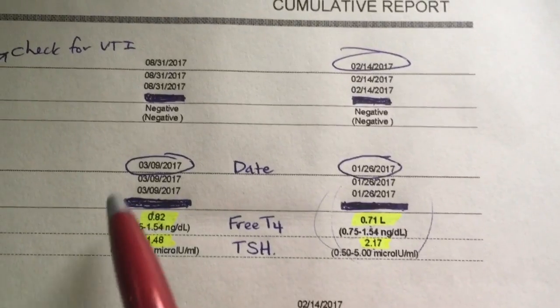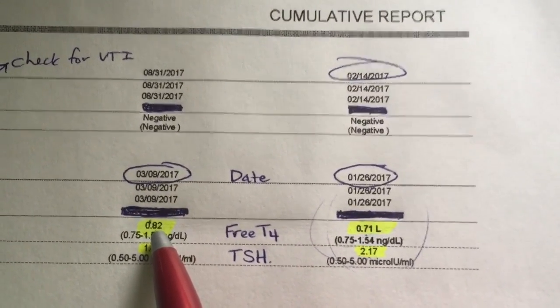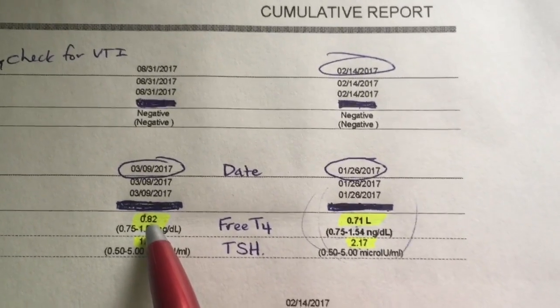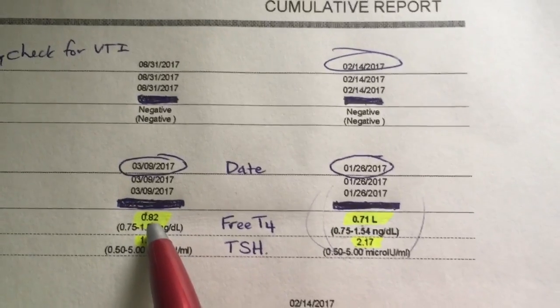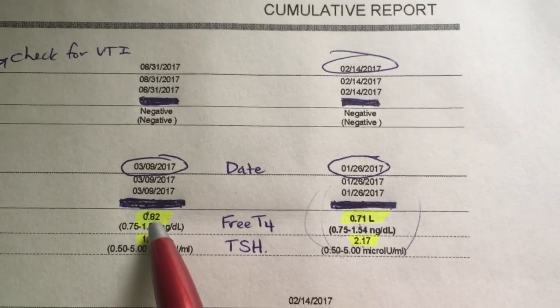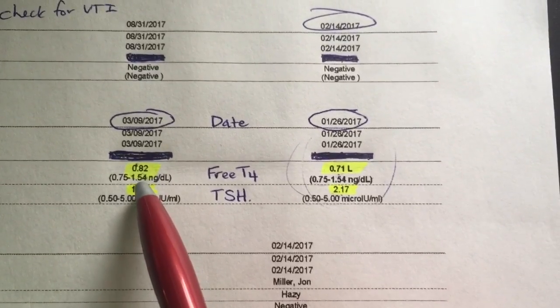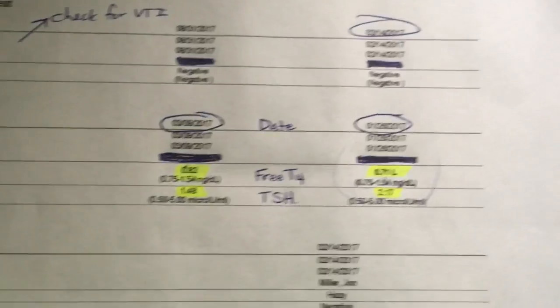In a couple months, they test again. Free T4 is at least in normal range, 0.82, still at the low end but in normal range. So she was told that her thyroid is okay and they don't know what the problem is with fatigue.